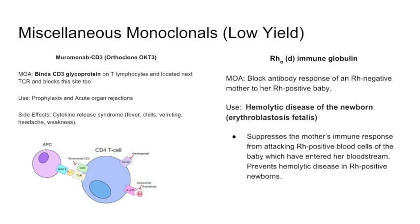Rho-D immunoglobulin is specifically used for hemolytic disease of the newborn, or erythroblastosis fetalis. This occurs when an Rh-negative pregnant female gives birth to a baby with Rh-positive blood. The mother's antibodies become sensitized, and a second Rh-positive baby can suffer hemolytic disease. Rho-D immunoglobulin is given to block the mother's sensitization response.